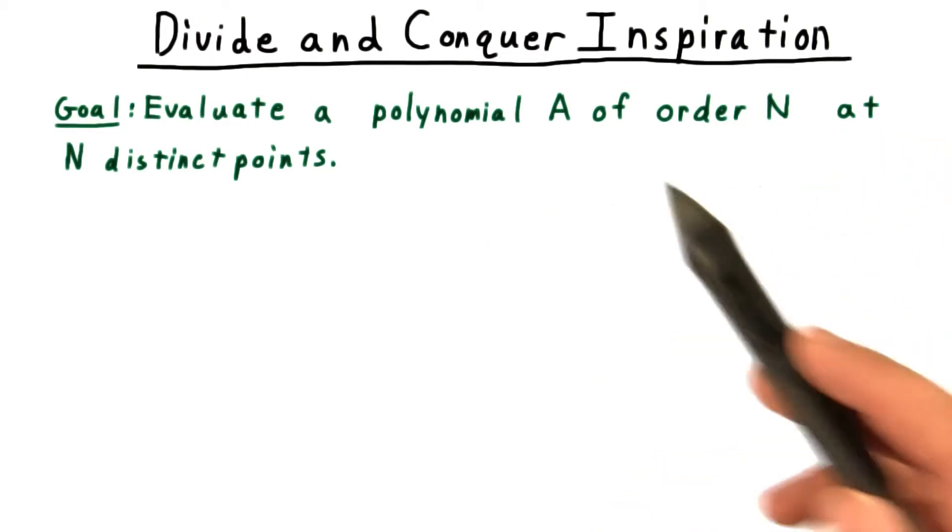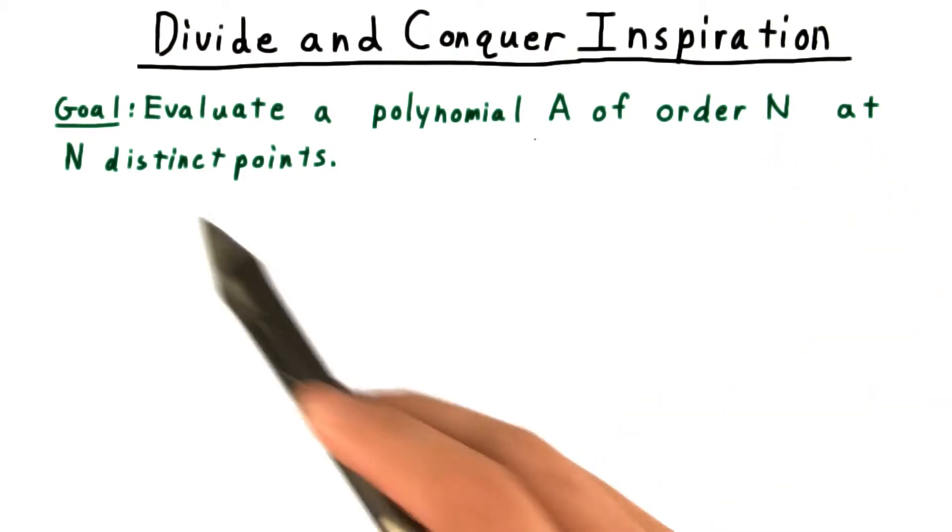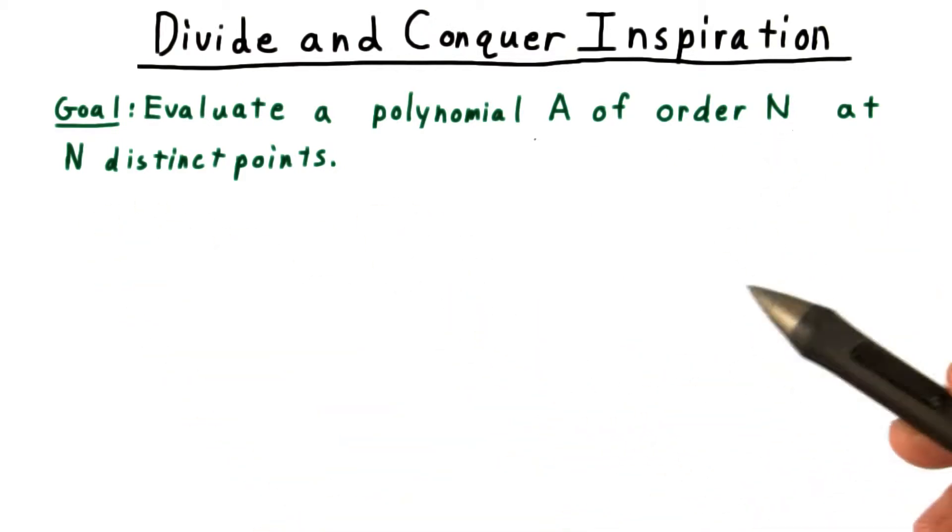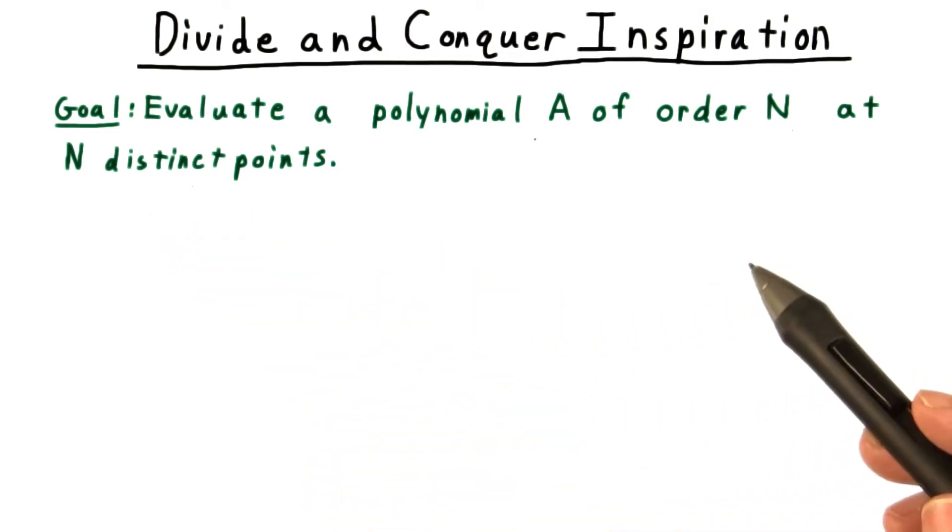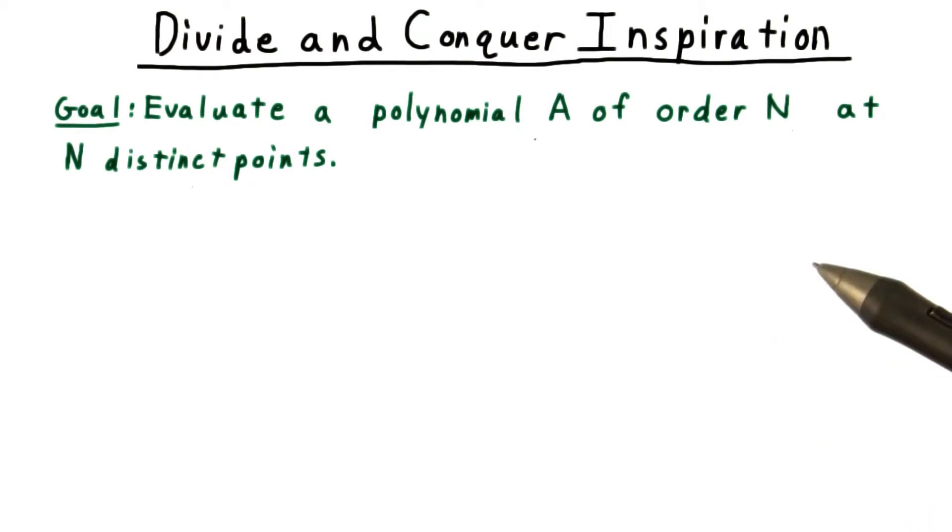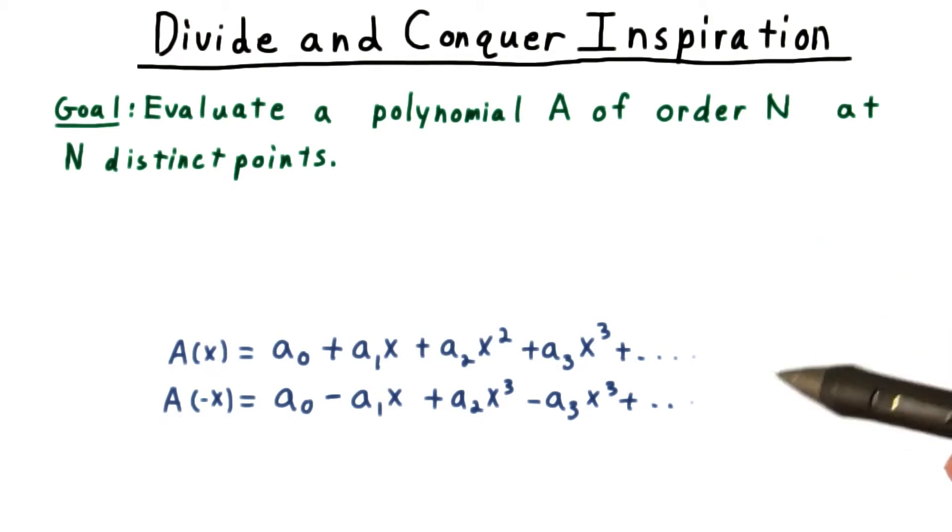Our goal is to evaluate a polynomial A of order N at N distinct points. Note that I've made the order of the polynomial and the number of points the same here. We can always pad the coefficients with zeros, effectively increasing the order, and we can always add more points, so there's no loss of generality here.